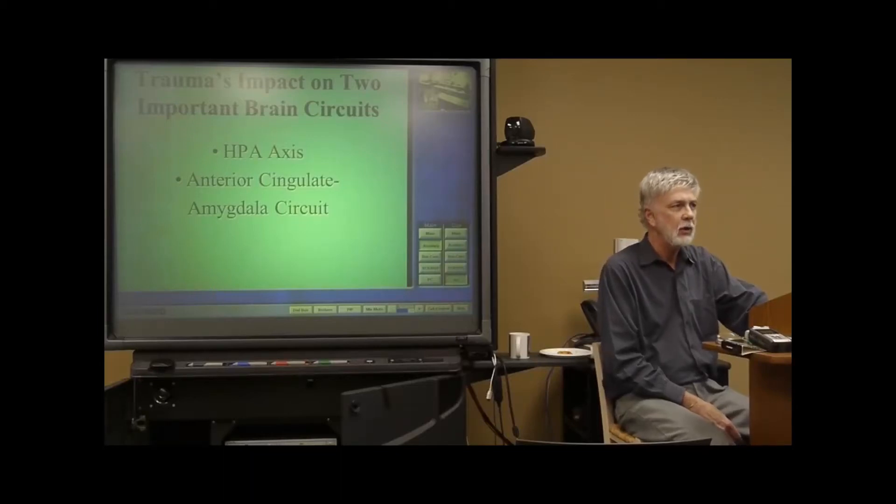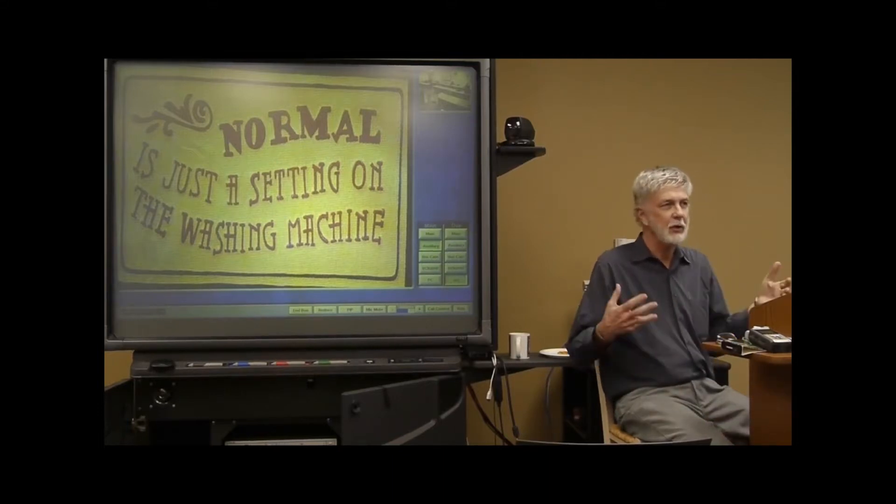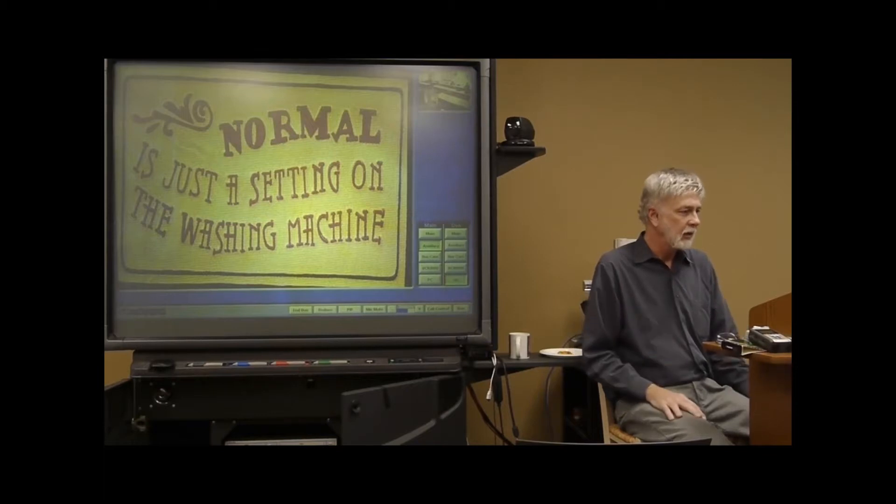So we're going to take a look at two brain circuits that have a lot to do with affect regulation: the HPA axis and the anterior cingulate amygdala circuit. We're going to do each one of these one at a time. First we're going to talk about what's normal and then we're going to talk about pathology.